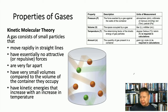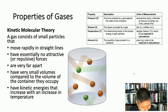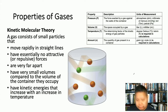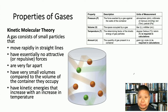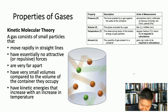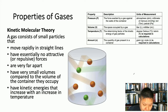The first variable is pressure — the force that a gas exerts against the walls of its container. The units we use to measure pressure are the atmosphere, millimeters of mercury, the Torr, or the Pascal.